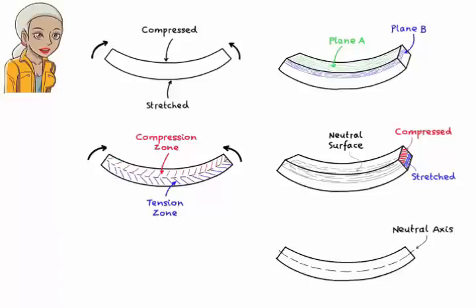So, when a beam bends, all its fibers change length, except for the fibers along the neutral axis. This fact helps us establish a simple mathematical relationship between the slope of the elastic curve and the geometry of the deformed beam. Let's see how.